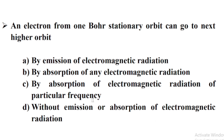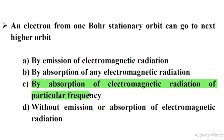An electron from one Bohr's stationary orbit can go to the next higher orbit — Option C: By the absorption of electromagnetic radiation of particular frequency.